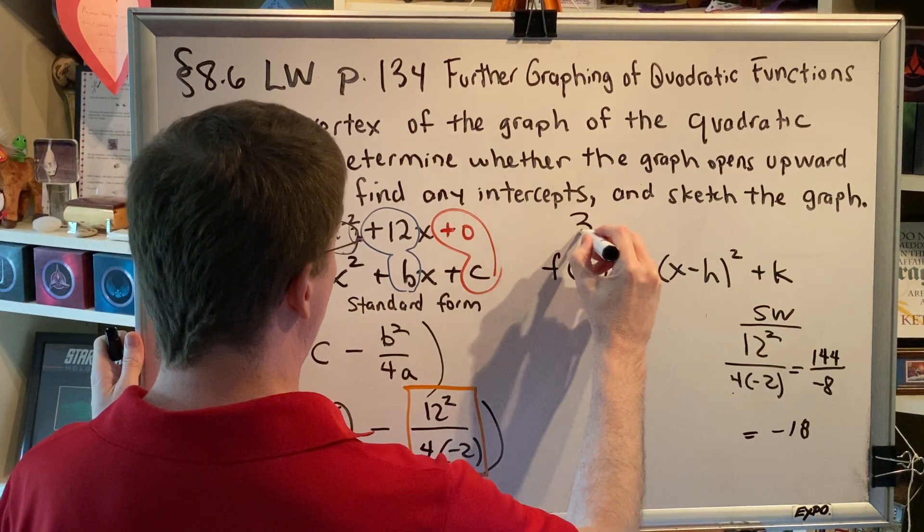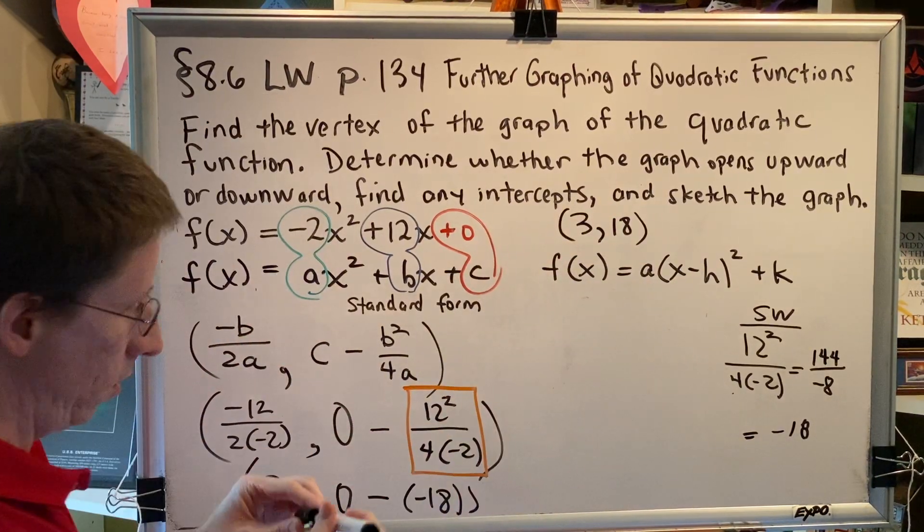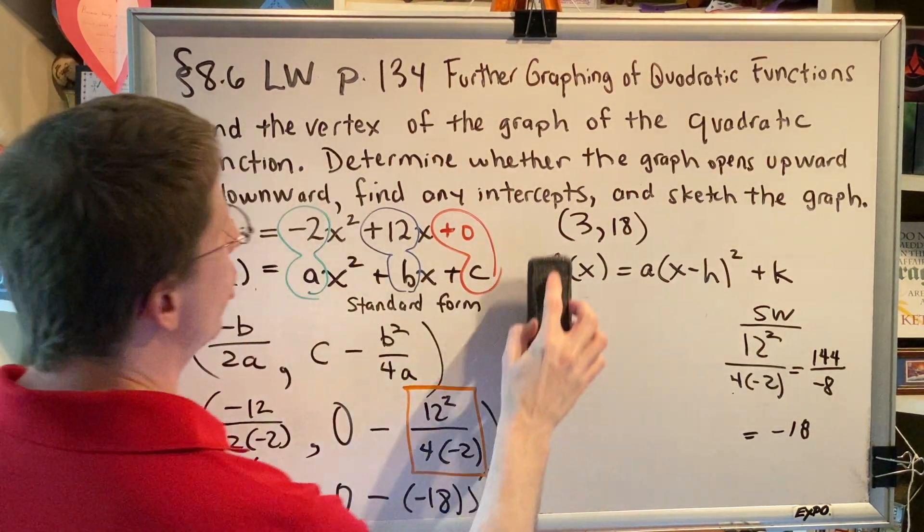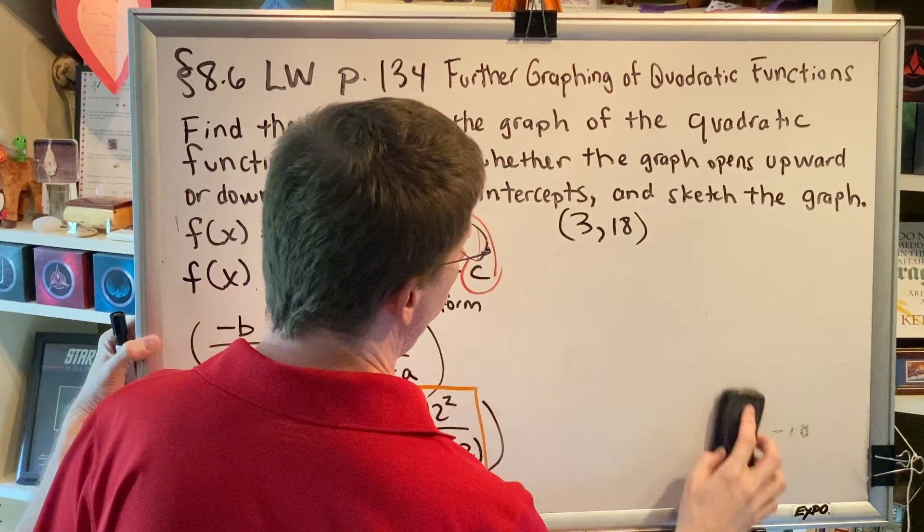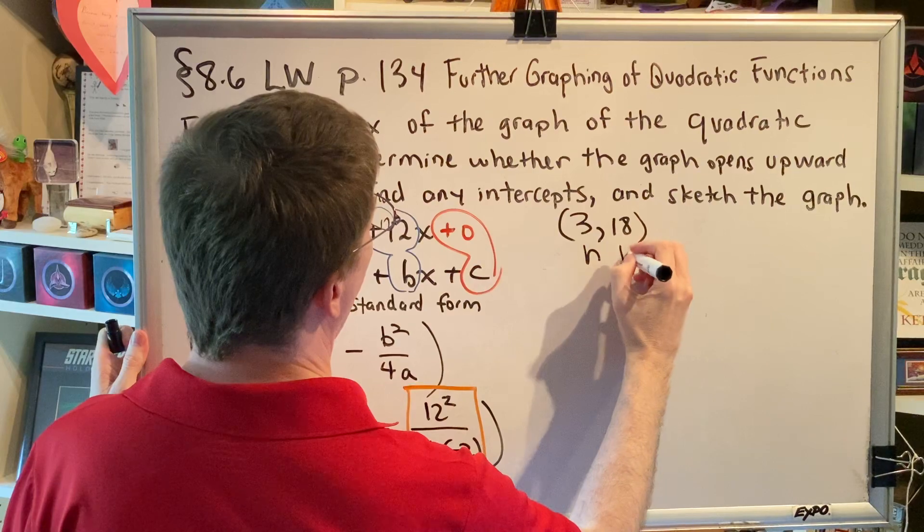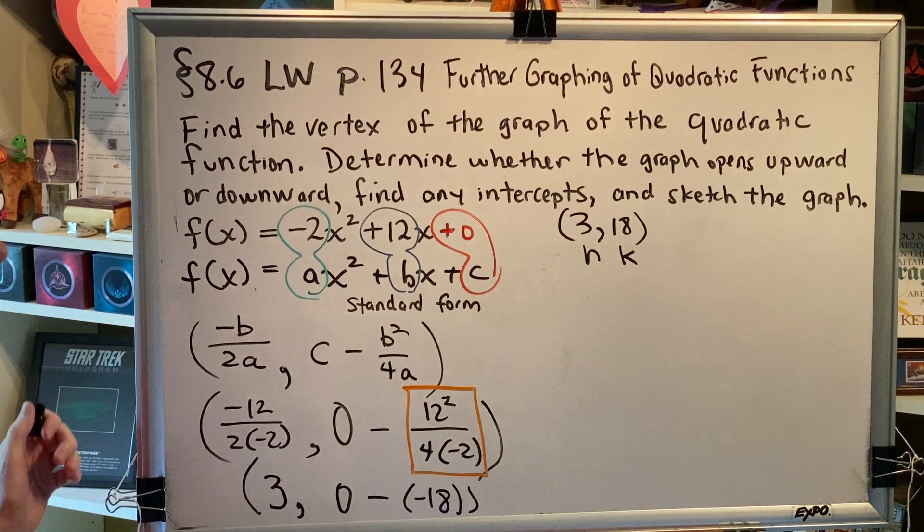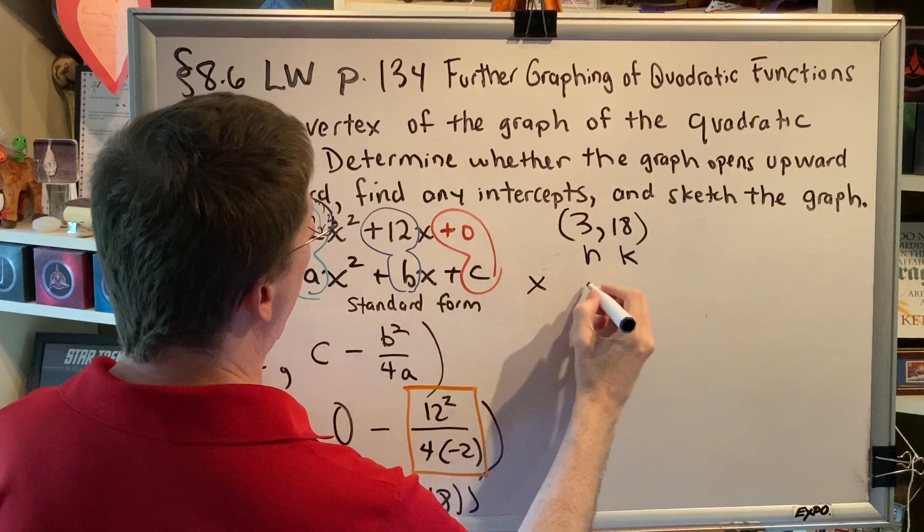So, we now know that our vertex is (3, 18). This tells us h and k. Of course, we already know a. We found that earlier. So, we can now make our xy table.